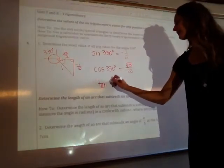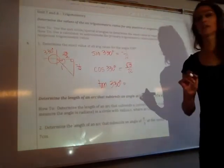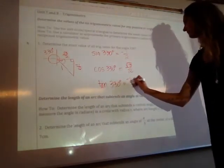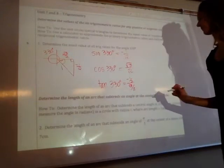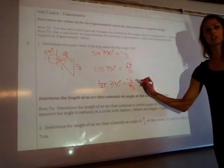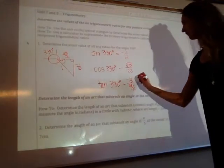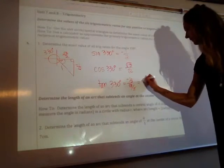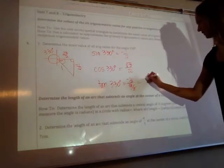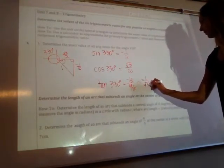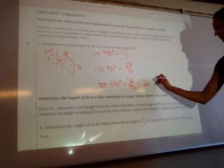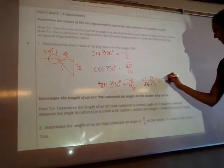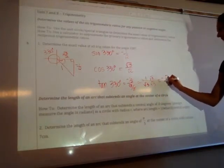Then we have tan 330, that's opposite over adjacent, so we're going to have negative 1 half over root 3 over 2. Anytime we have the same denominator in the numerator as we do denominator, those cancel out. You can multiply by the reciprocal to figure that out, or you just memorize it. So, we're left with negative 1 over root 3. We will need to rationalize, so multiply by root 3 over root 3. Then we end up with negative root 3 over 3.